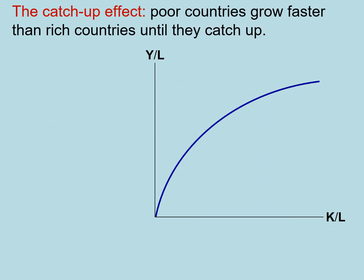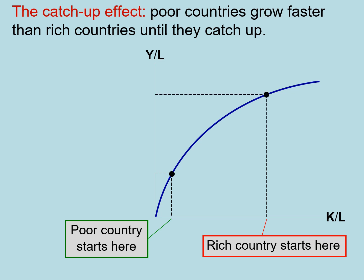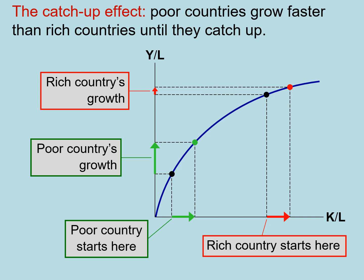Diminishing returns can also help us explain why sometimes we see that poor countries grow much faster than rich countries. Imagine a poor country that starts with a relatively low level of capital and a rich country that starts with a high level of capital. In the poor country, an increase of 10 units of capital will result in a large increase in productivity. The same 10 units of capital will increase productivity only by a little in rich countries. So as countries catch up to the rich countries in the level of inputs they have available for production, they will start with very fast levels of economic growth, and eventually once they catch up to the leaders, that will slow down and match their growth rate.